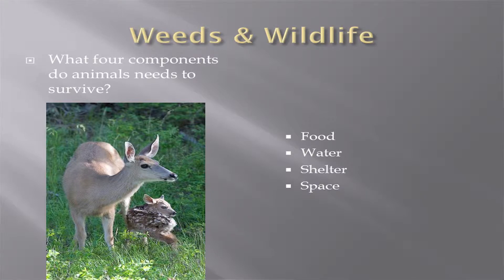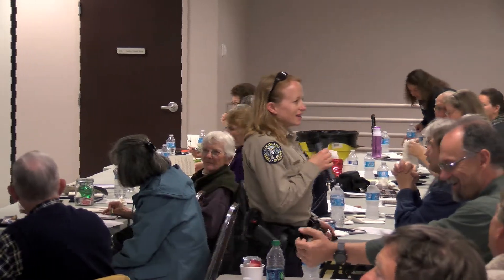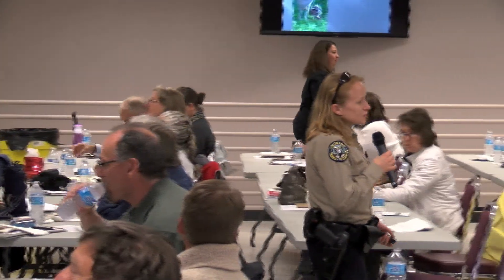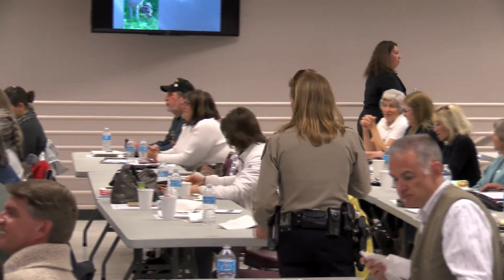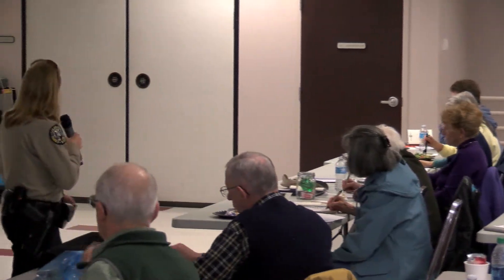What four components do animals need to survive? Food, water, shelter — and there's one more. Oxygen is true, but that's not the fourth one. They need space as well, so you've got food, water, shelter, and space. Those are kind of the four things that we're going to look at today, and I want you to think about those things as I talk.